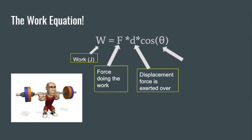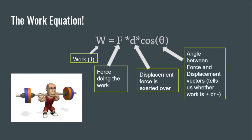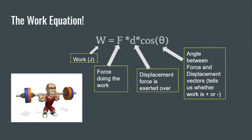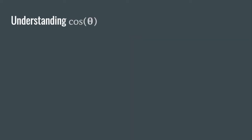Cosine theta is kind of easy but also really difficult to understand. Cosine theta is the angle between the force and displacement vectors, and it tells us whether work is positive, negative, or in some cases zero. Let's take a further look at cosine theta on the next slide.